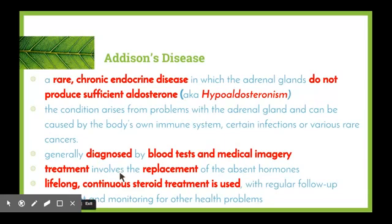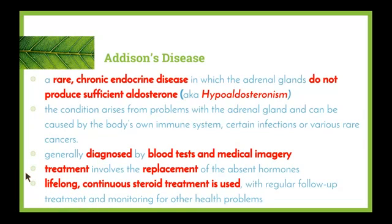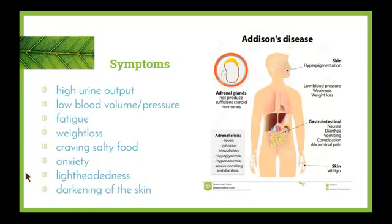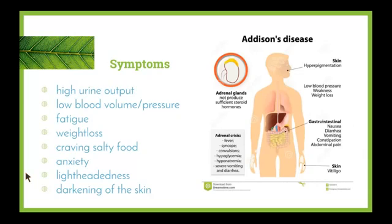Addison's disease is generally diagnosed by blood tests and medical imaging. Treatment involves the replacement of absent hormones, and lifelong continuous steroid treatment is often used with regular follow-up and monitoring for other health problems. Symptoms of Addison's disease can include high urine output — because without aldosterone, salt is not drawn from the nephron and excess water is excreted — leading to decreased blood volume and blood pressure. Other symptoms can include fatigue, weight loss, craving salty food, anxiety, lightheadedness, and darkening of the skin.